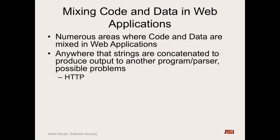Fundamentally, anywhere that strings are concatenated together and used to produce output to some other program or parser, possible problems can occur. In HTTP, user input can be used to generate a location URL or inject arbitrary HTTP headers. In HTML, this is the root cause of cross-site scripting vulnerabilities — the program builds an HTML response by concatenating strings and sending it to the browser, which parses and interprets it.